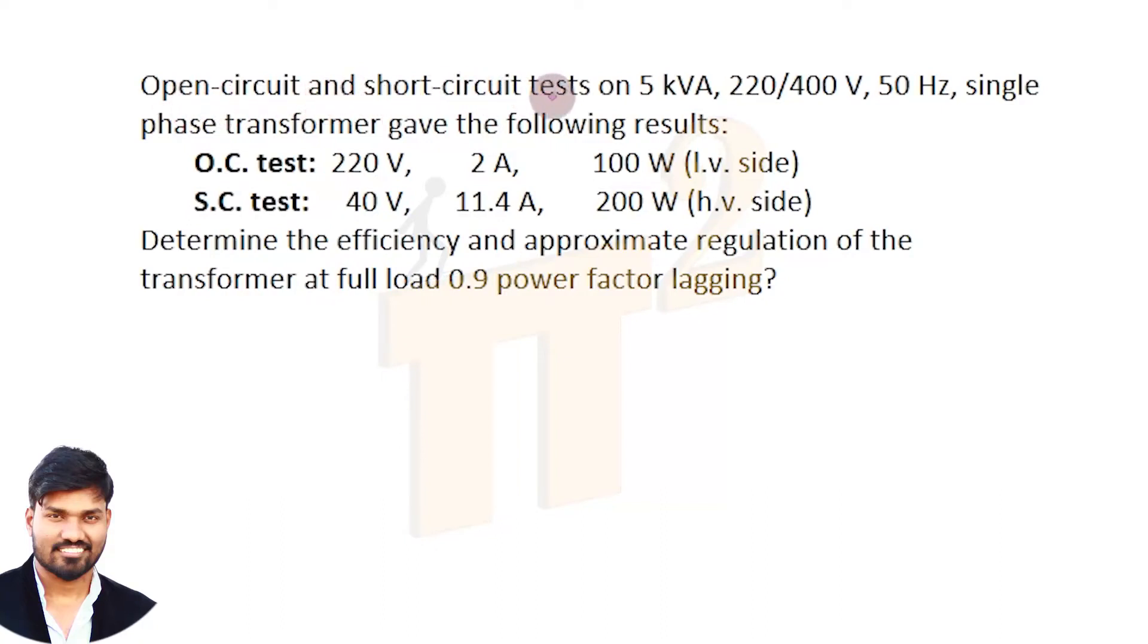Open circuit and short circuit test on 5 kVA transformer. This is the full load rating. When dealing with OC SC test, take it like this: E_L is the low voltage side and E_H is the high voltage side, because in OC test you give supply on low voltage side, in SC test you give supply on high voltage side.